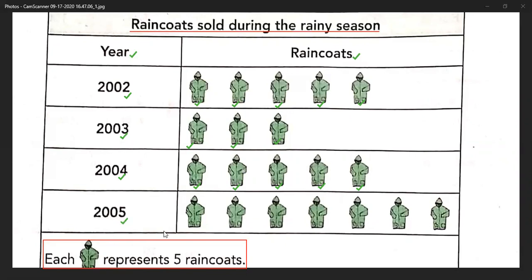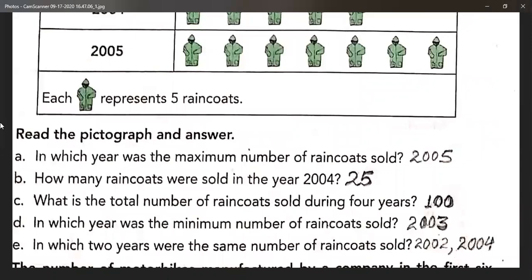In the year 2005, counting: 5, 10, 15, 20, 25, 30, 35 — so in the year 2005, 35 raincoats were sold. Now we need to read the pictograph and answer the questions.